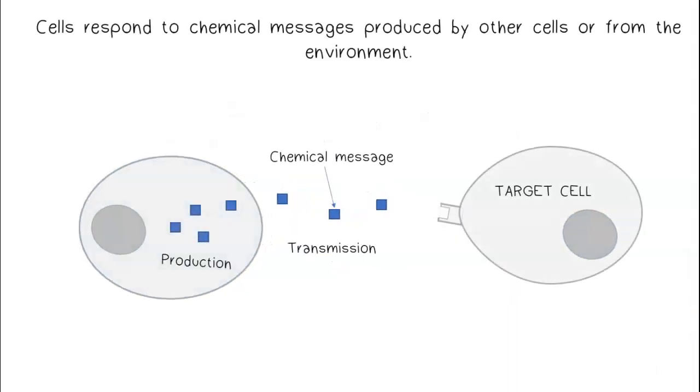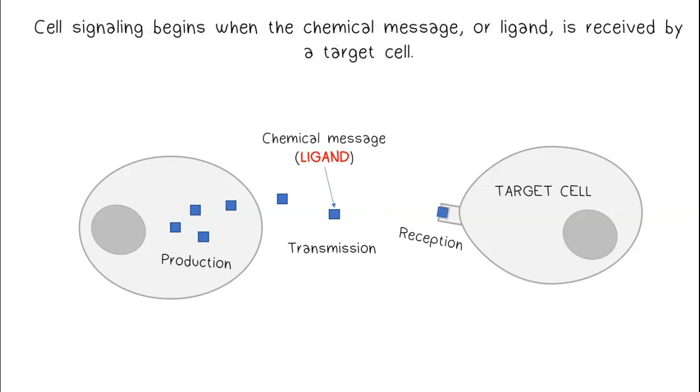Cells respond to chemical messages produced by other cells or from the environment. Cell signaling begins when the chemical message, or ligand, is received by a target cell.